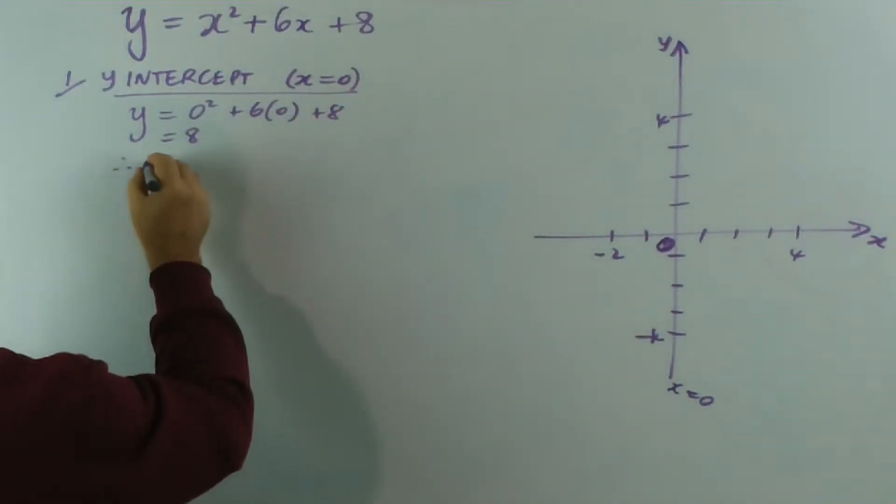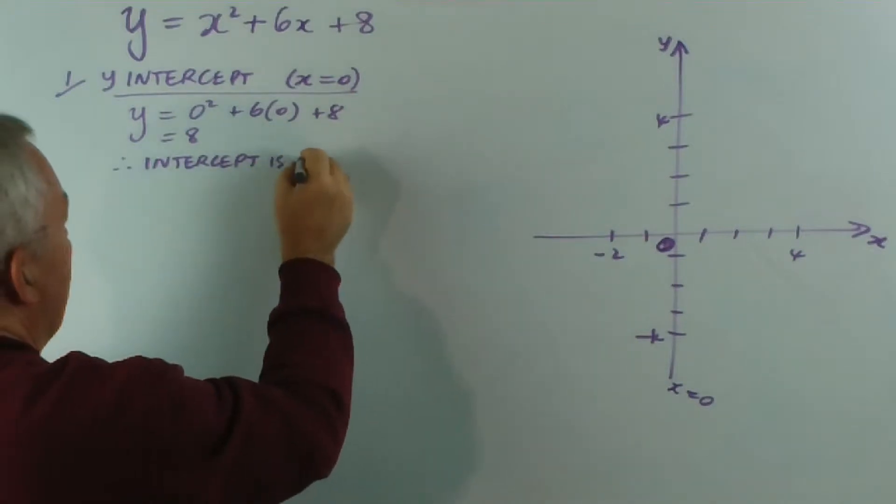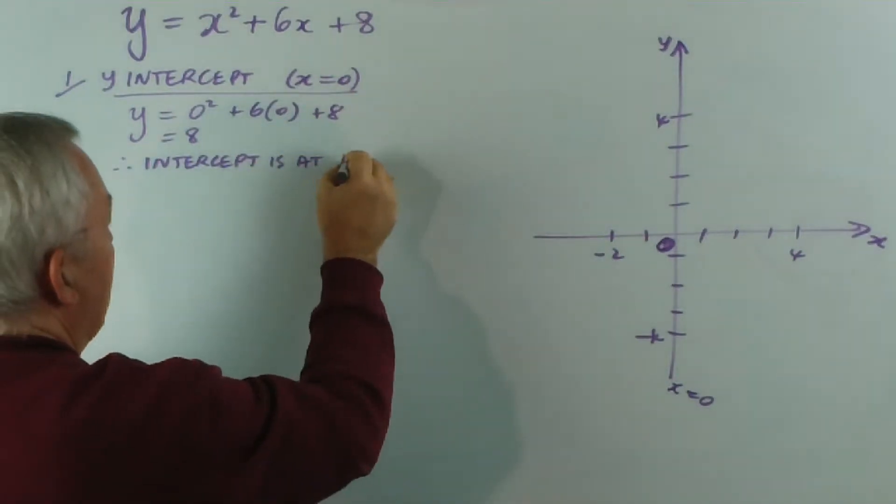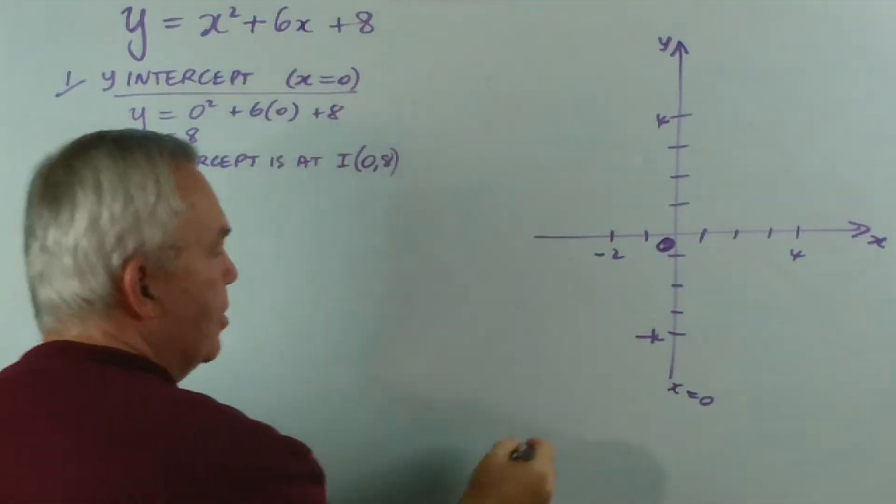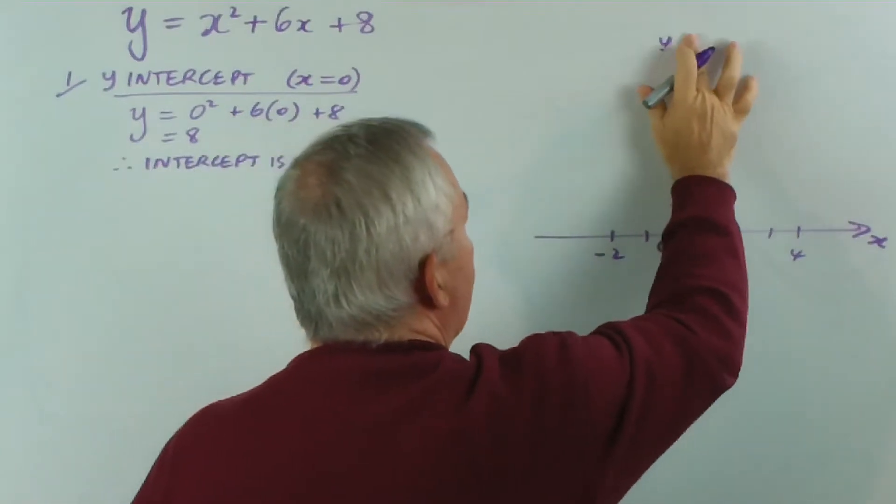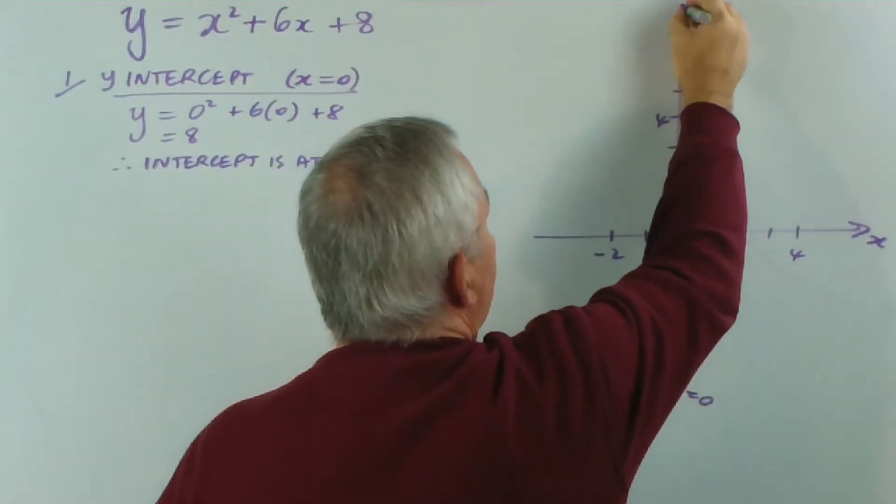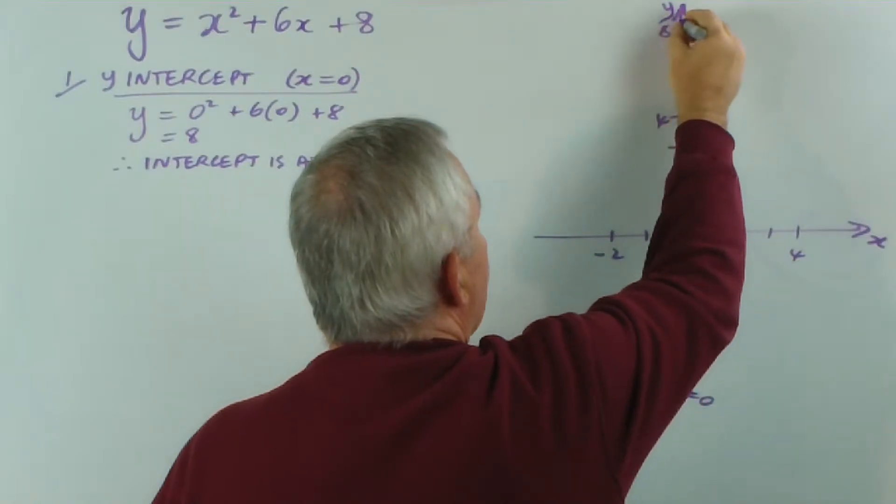So my summary is, therefore, the intercept is at—and I'll call it the letter I—the point zero eight. So let's mark that straight away. I should have gone much higher here, shouldn't I? So there's our intercept.